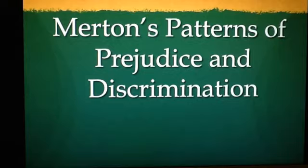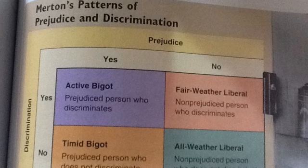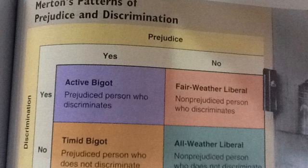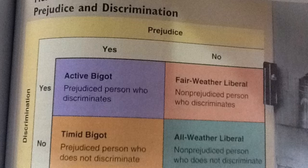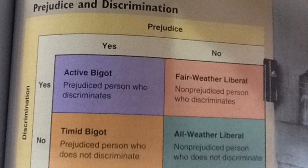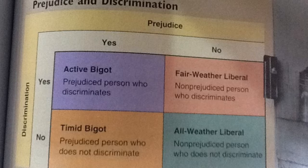A guy named Robert Merton suggested that there are four types of behavior with regards to prejudice and discrimination. First up is the active bigot, who is both prejudiced and discriminatory. This person treats minorities badly and doesn't apologize for it or hide it — think the KKK or Hitler. The timid bigot is prejudiced but does not discriminate. He secretly dislikes a minority group but only talks, not acts, due to social pressures — knowing he might lose his job or be blacklisted if he shows his racist tendencies.